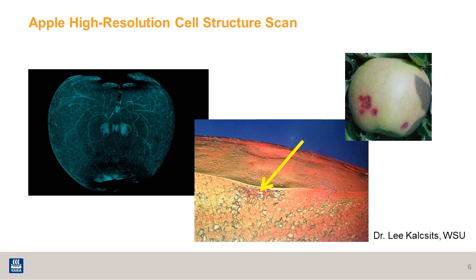Here's a high-resolution apple cell structure scan made by Dr. Lee Kaltzitz from WSU in Wenatchee, Washington. Taking a look at the cross section of the apple, you can see the air pockets between the cells — a big air void caused by calcium deficiency, because the cells are not binding together very strongly. This manifests into bitter pit on the surface of the apple fruit.